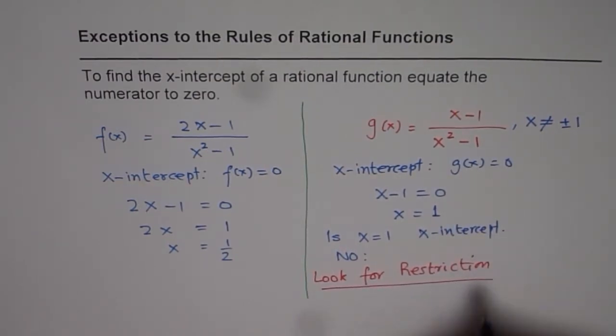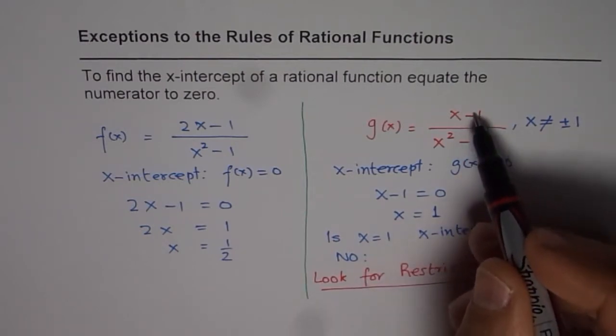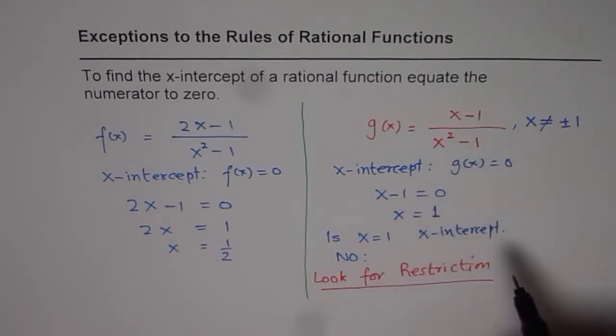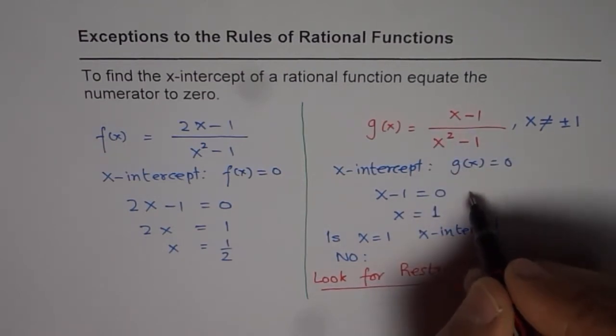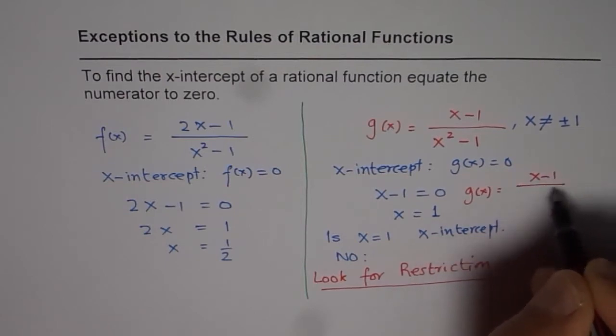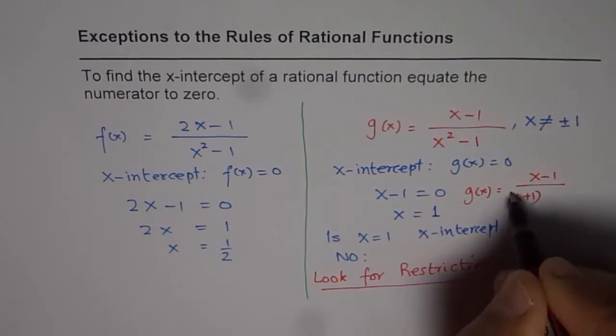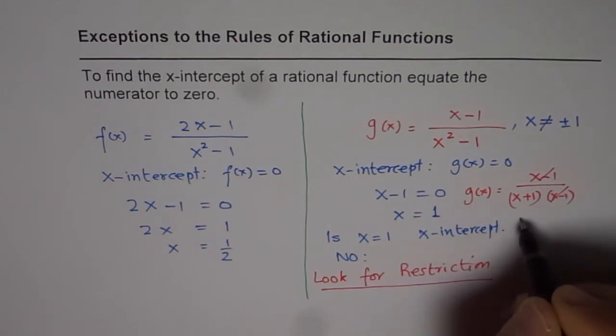Look for restrictions. Since x equals 1 is a restriction, we have a vertical asymptote there. Sorry, we have a hole there because it gets cancelled off when you simplify it. So you could actually write g(x) as x minus 1 over x plus 1 times x minus 1. It cancels off, leading to a hole.